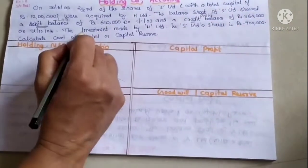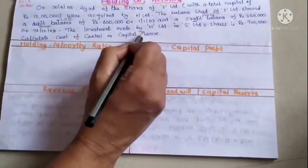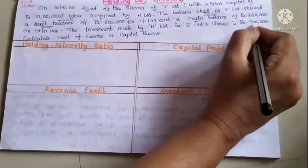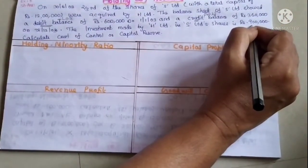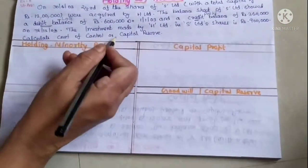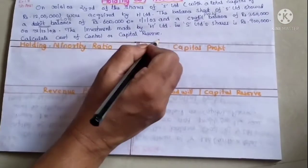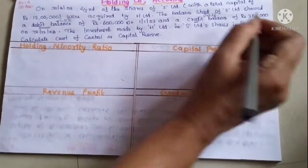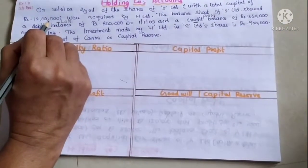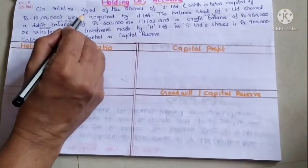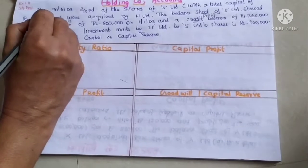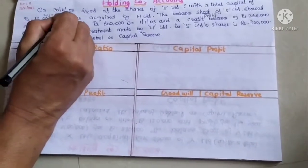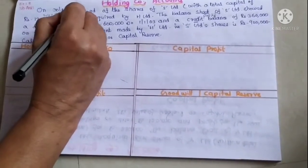The investment made by H Limited in S Limited shares is 9 lakh rupees. Total shares are 12,00,000, of which two-thirds belong to H Limited and one-third to minority holders.